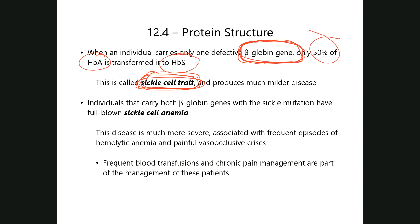However, if you happen to be that unlucky individual in which both of your parents are carriers of a sickle hemoglobin gene and the child ends up with both defective genes, then 100% of the hemoglobin in those individuals will be sickle hemoglobin. They suffer from the full-blown disease at its maximum expression, which we refer to as sickle cell anemia — much more severe, with much more frequent episodes of hemolytic anemic attacks and painful vaso-occlusion crises.